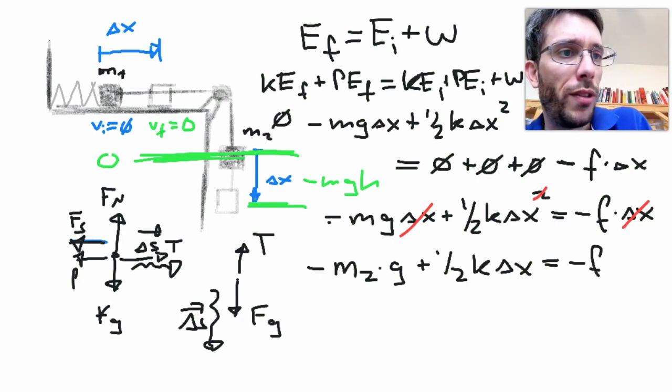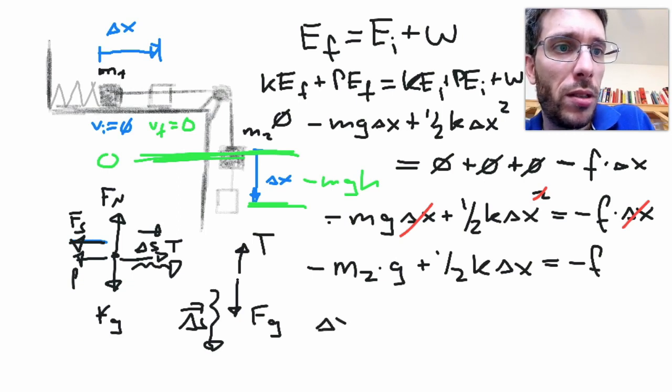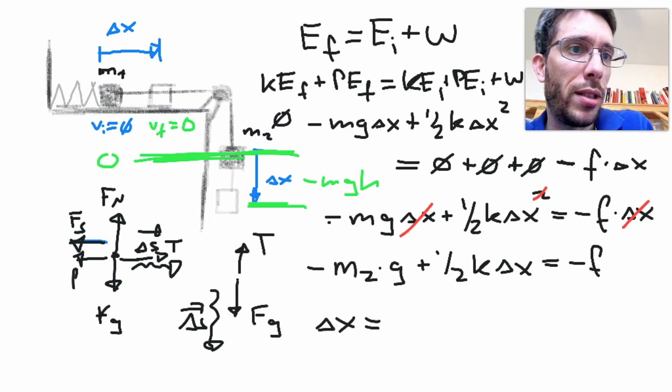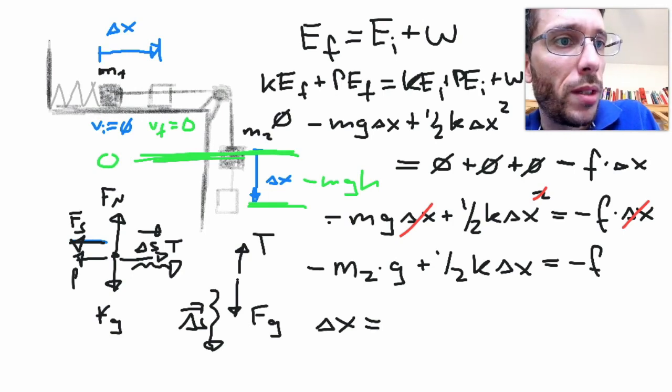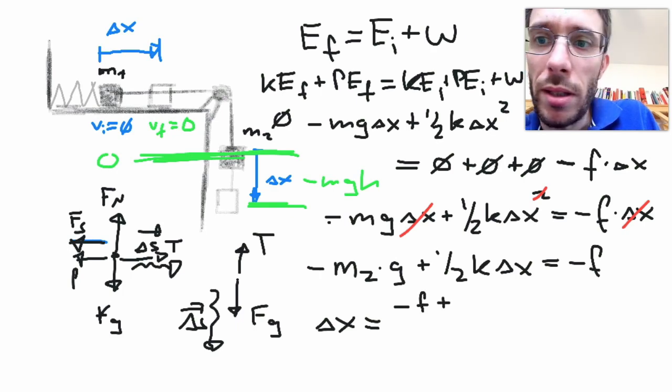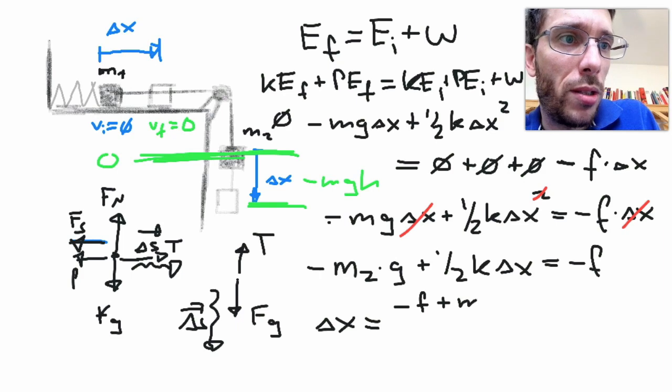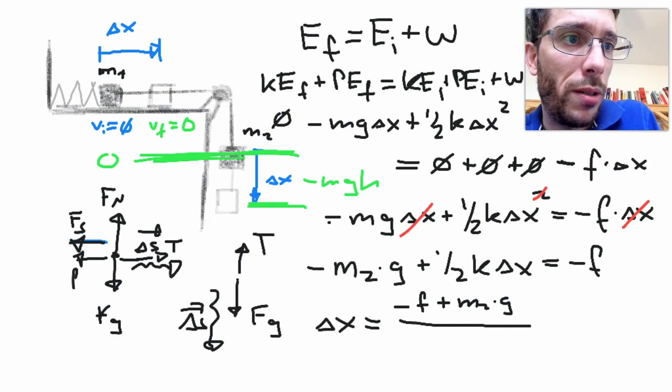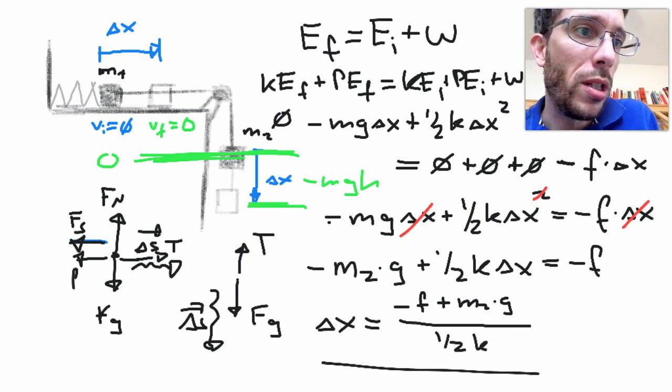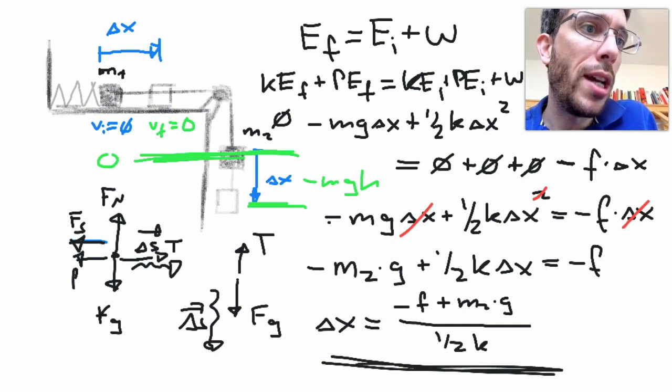So if I solve this for delta x, delta x will be minus the force of friction plus mass 2 times gravity divided by 1 half of spring constant. And that's my final answer.